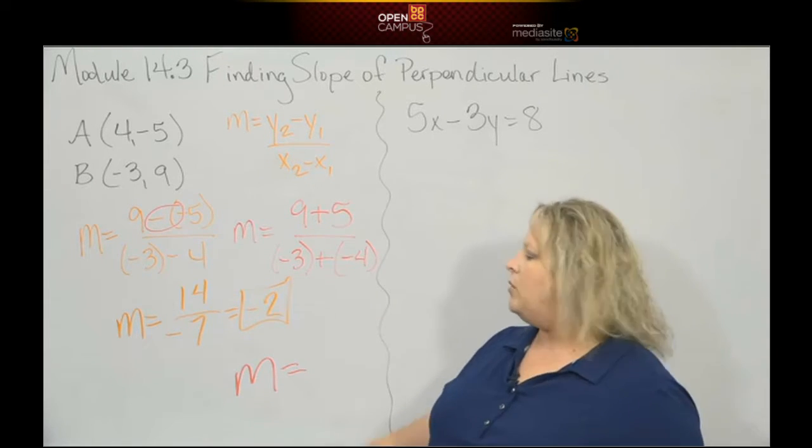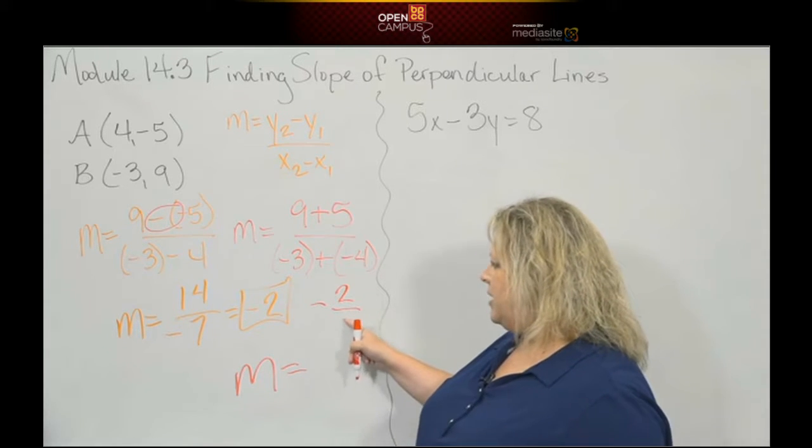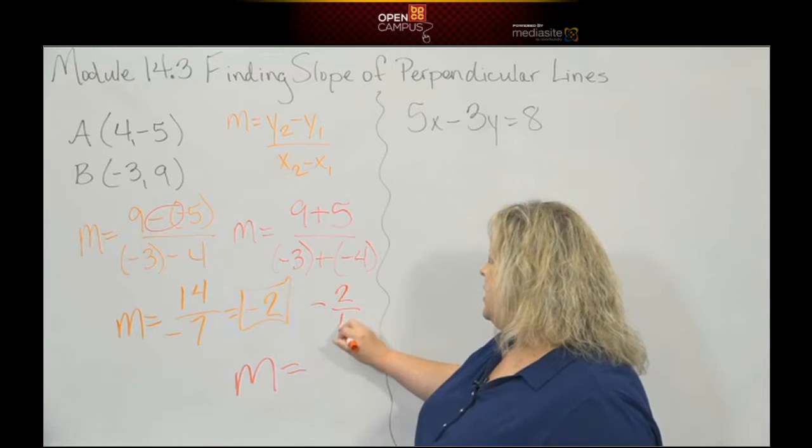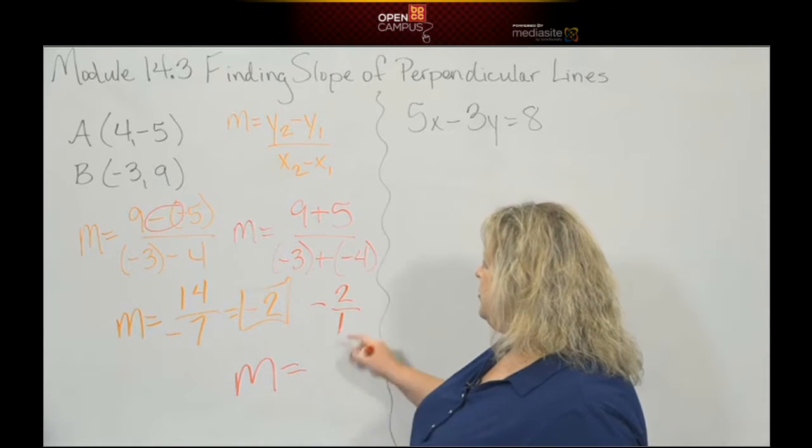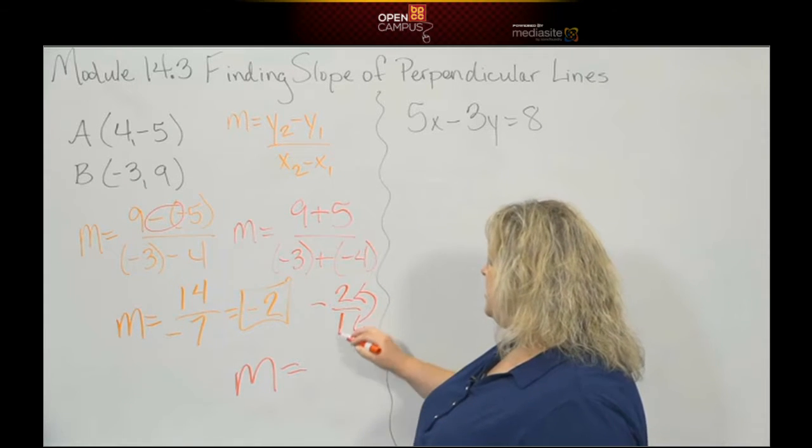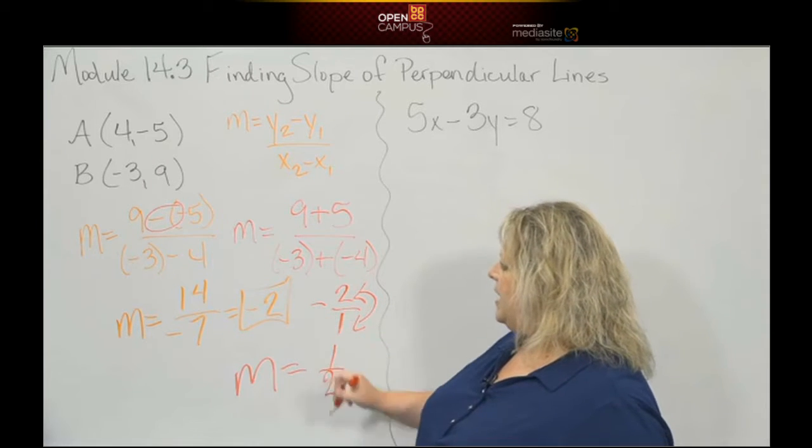Well, if I have negative 2, what is that understood number that goes here in the denominator? It's a 1, that's right. So this is a 1. To do the reciprocal, reciprocal means take your fraction and flip it, so that gives me 1 half and it goes from being a negative to a positive.